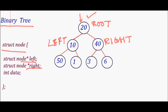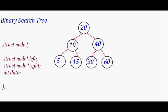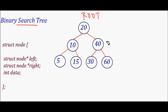Next, let's look at what a binary search tree is. We have added the word 'search.' The tree can still have a maximum of two children — the left child and the right child. Nodes with no children are called leaf nodes. The BST property states that the value of the left child is less than or equal to that of the parent, and the value of the right child is greater than or equal to that of the parent. For example, node 40's left child is 30, which is less than 40, and its right child is 60, which is greater than 40.